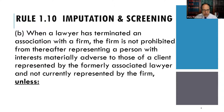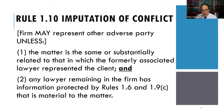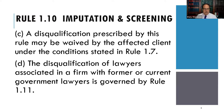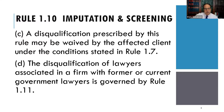When a lawyer has terminated an association with the firm, the firm is not prohibited from thereafter representing a person with interests materially adverse to those of a client represented by the formerly associated lawyer and not currently represented by the firm, unless the matter is the same or substantially related and any lawyer remaining in the firm has information protected by Rules 1.6 and 1.9(c) that is material. The disqualification may be waived by the affected client under conditions stated in Rule 1.7, and disqualification of lawyers associated with former or current government lawyers is governed by Rule 1.11.